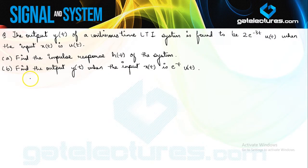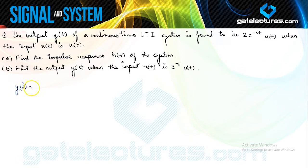So now we look at this question. They have given us the output of a continuous time LTI system which is 2e^(-3t) * u(t). This is the output of the system when the input applied was u(t).